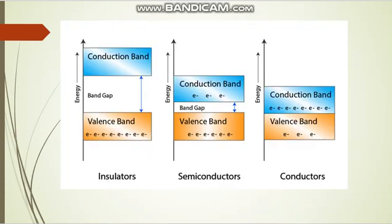First, we will see what is energy gap. The energy gap is nothing but the gap between the valence band and conduction band. In materials, the outermost shell electrons orbits combine to form a valence band, and the next higher level energies combine to form a conduction band. There is some gap between the valence band and conduction band, and that gap we call the energy gap.